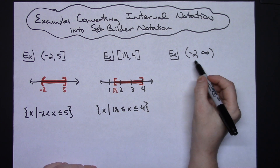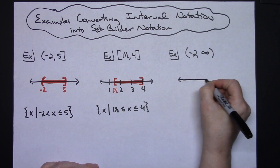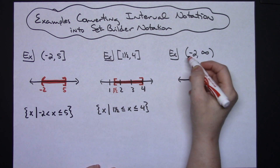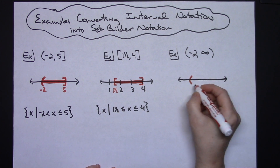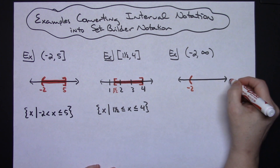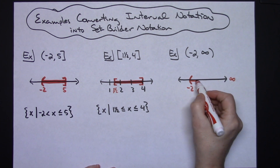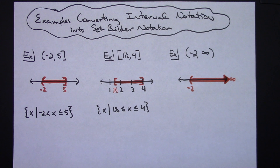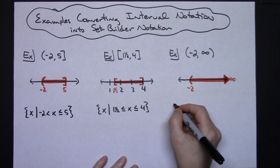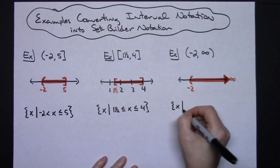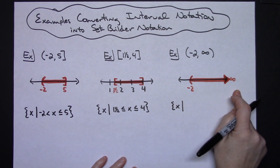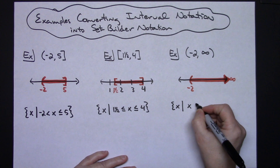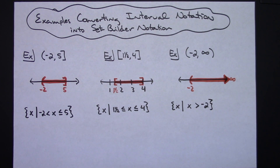On the last example, the open interval from negative two to infinity — on the number line, negative two is not included, so we place a curvy bracket at negative two, and the interval goes all the way to positive infinity, shading the arrow showing it goes on forever. Turning that into set builder notation: the set of all x such that x is greater than negative two.